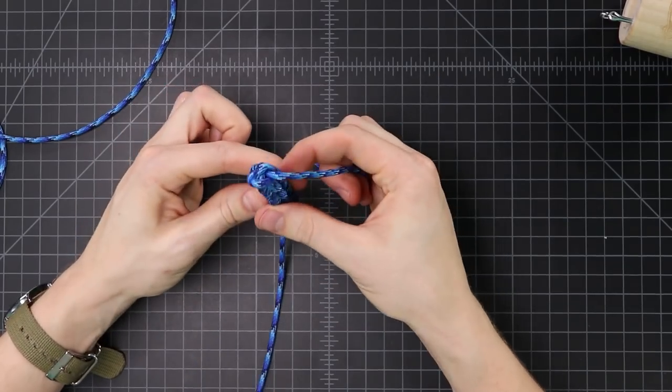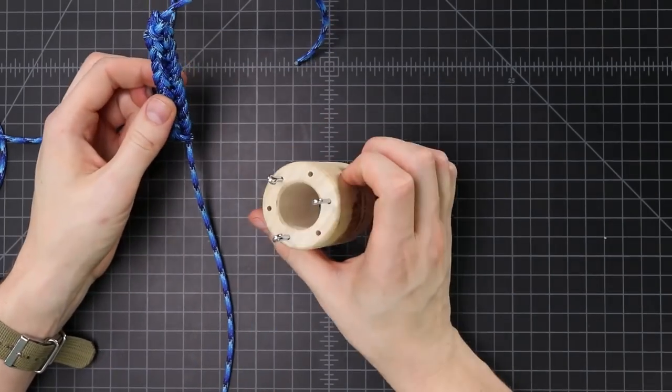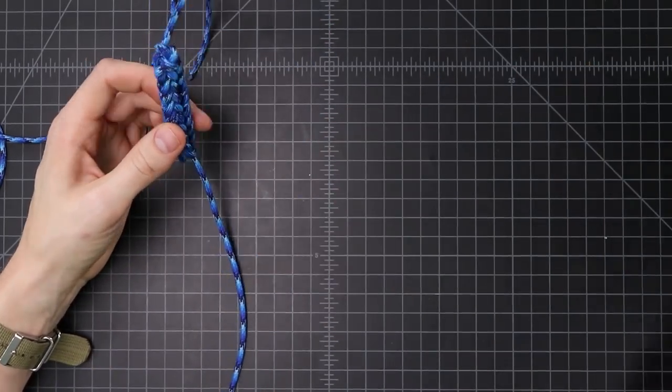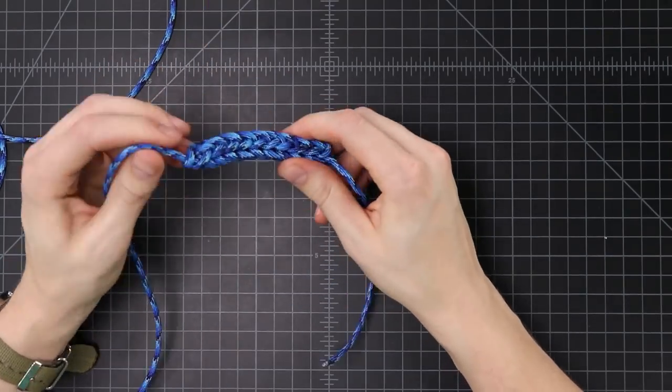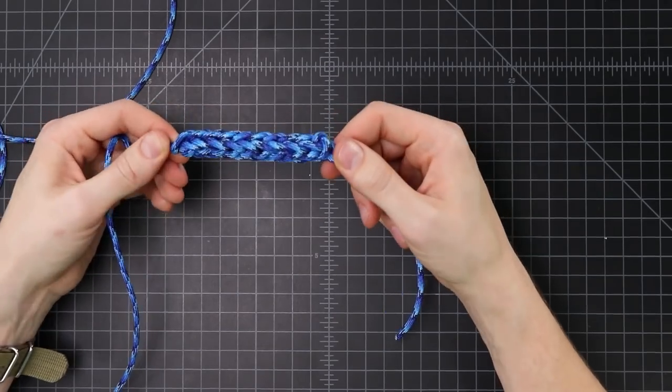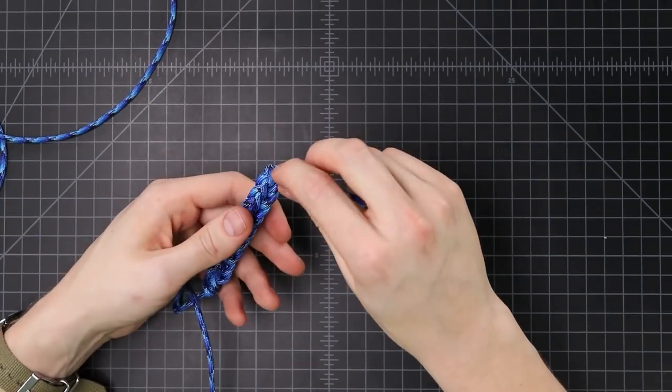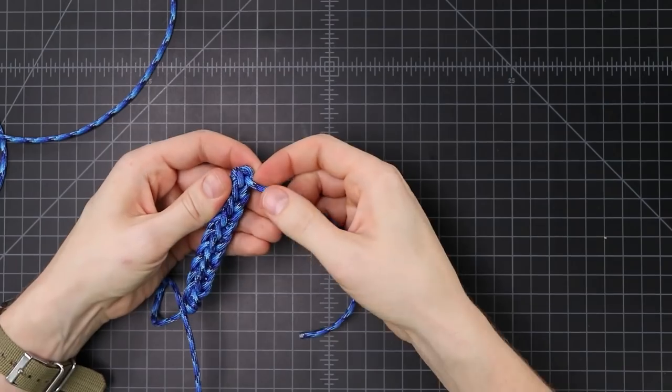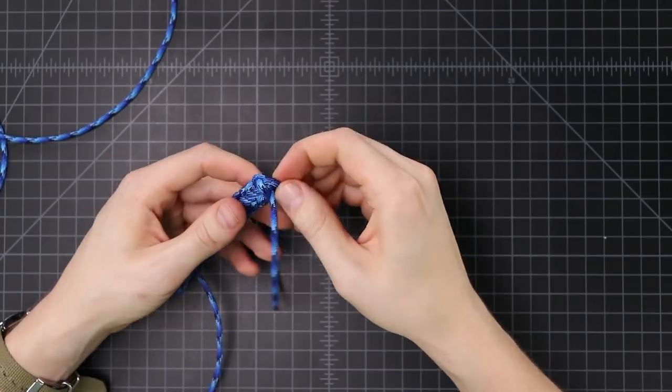This one is kind of triangular if you look at it on the end. We've got our three, they'll end up more round if you use more pegs, but you'll also end up using more cord and it'll be wider as well. This can easily be turned into a keychain if you've got a split key ring. Just cut your end off, melt it so that doesn't pull through your knot, and then put a split ring on the end.